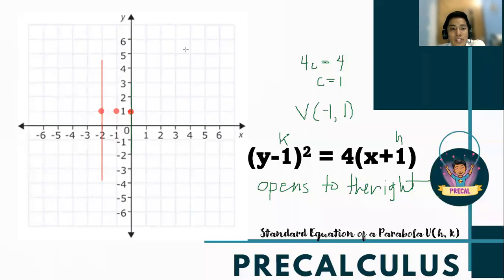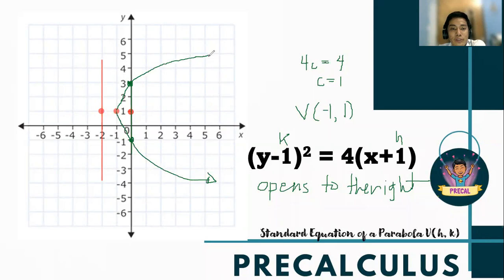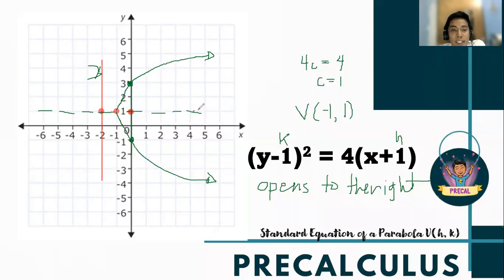Connect the endpoints of the latus rectum to draw the rightward-opening parabola. Do not forget to label everything, including the axis of symmetry, the equation of the directrix, the equation of the axis of symmetry, the coordinates of the focus, the coordinates of the vertex, and the name of the parabola itself.